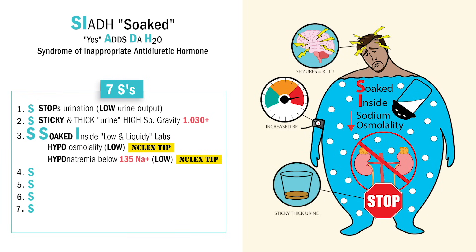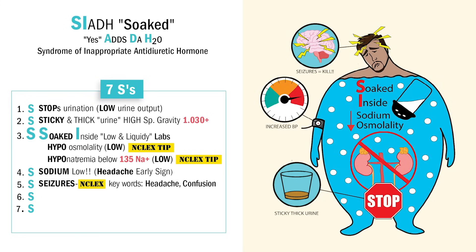The next S is again for NCLEX favorite — sodium that is low. The NCLEX loves to test you on this. Swelling in the brain with cerebral edema and seizures and death. Often the earliest signs — the big NCLEX keyword is headache, but also confusion and agitation. The next S is for seizures from that low sodium. We set up seizure precautions for SIADH with that low sodium — huge priority.